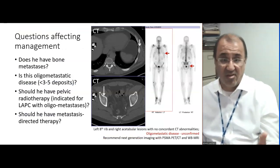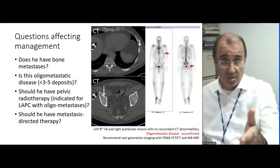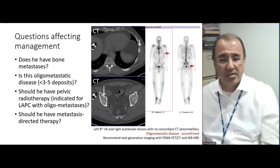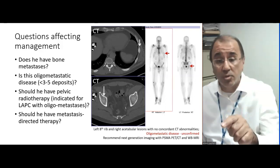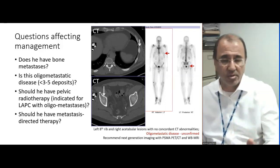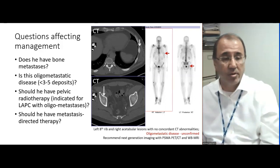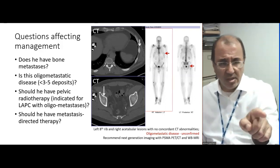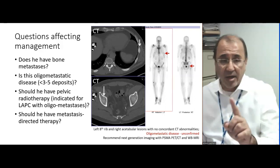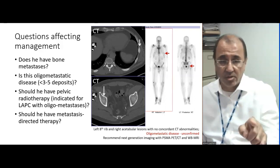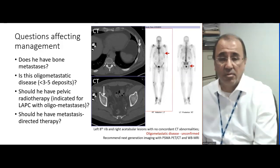Question: does he have bone disease? Is this oligometastatic disease — in other words, less than three deposits? Should he have pelvic radiotherapy, which would be indicated for locally advanced prostate cancer with oligometastatic disease? Should these two lesions be treated with metastasis-directed therapies? I don't think you could answer these questions using these two sets of images.